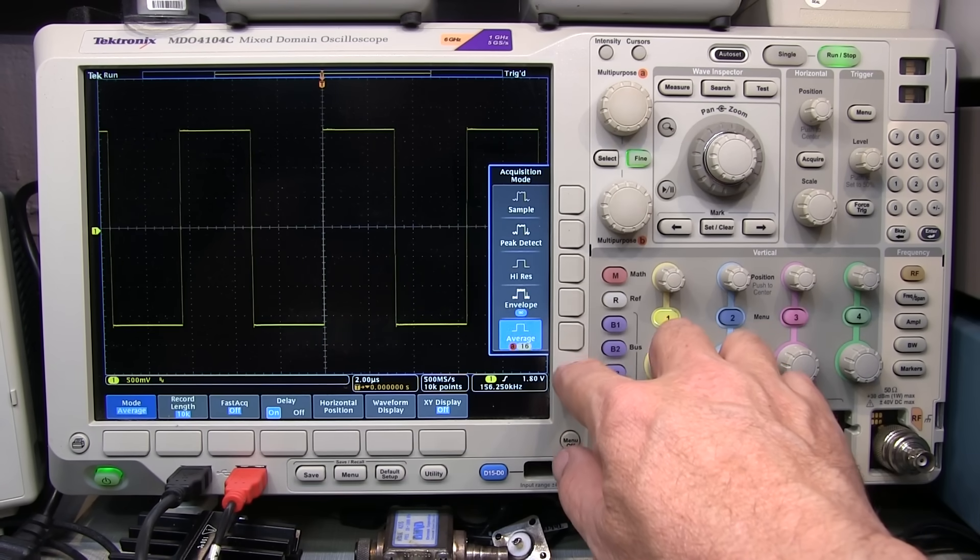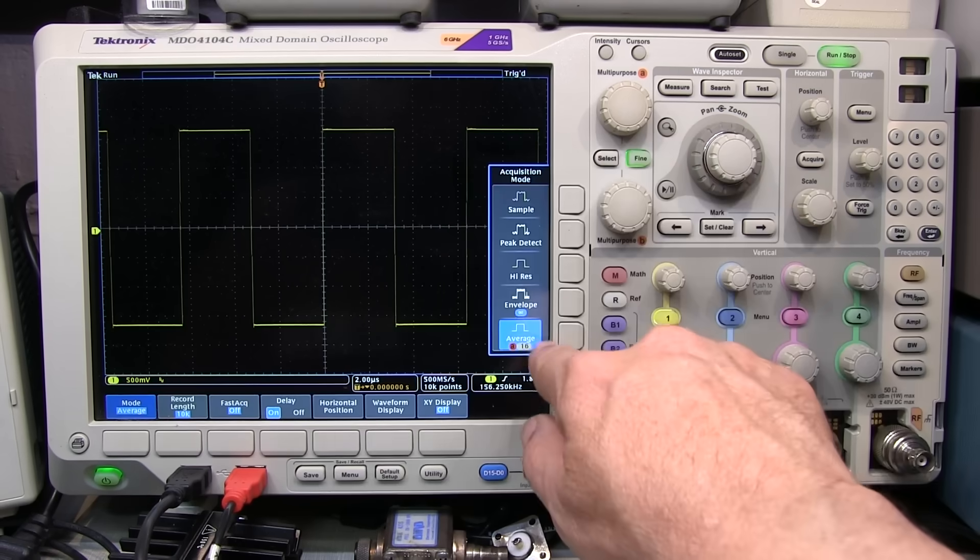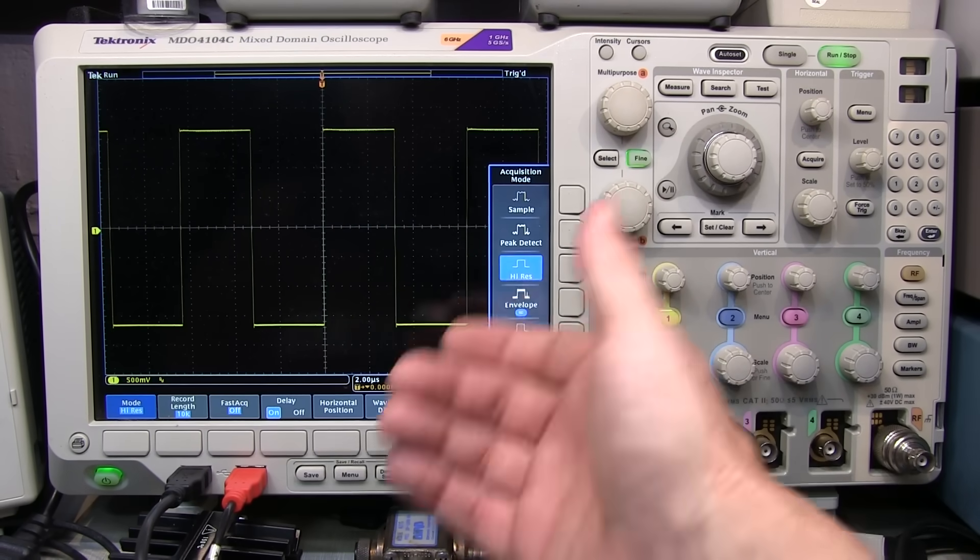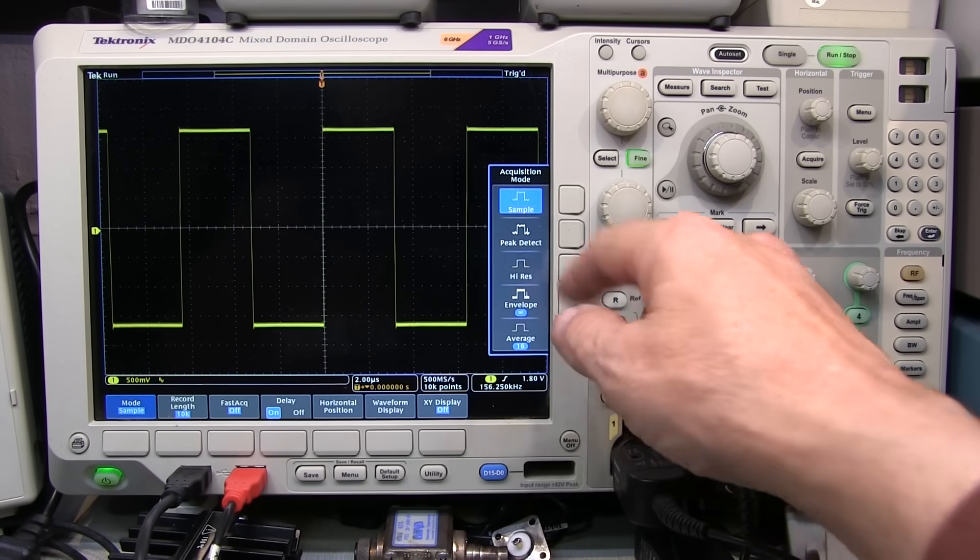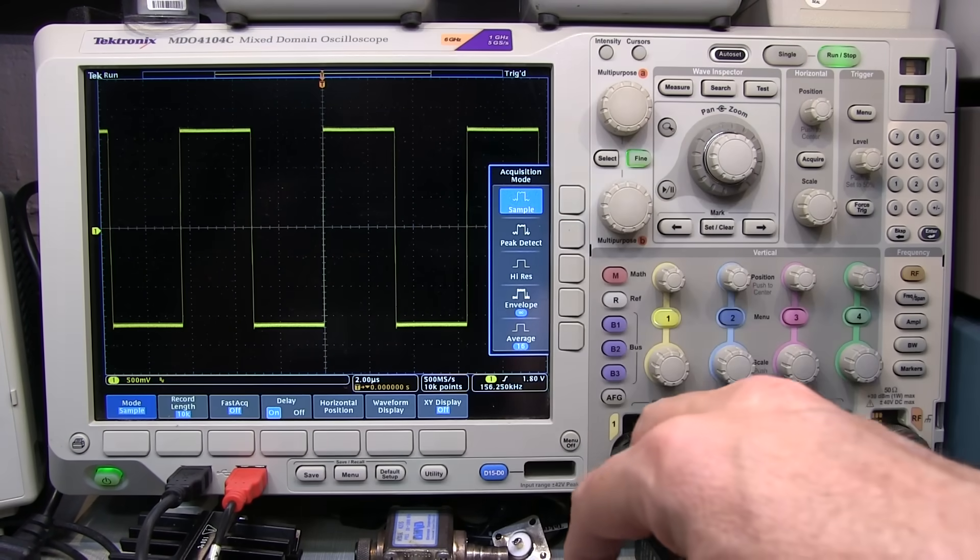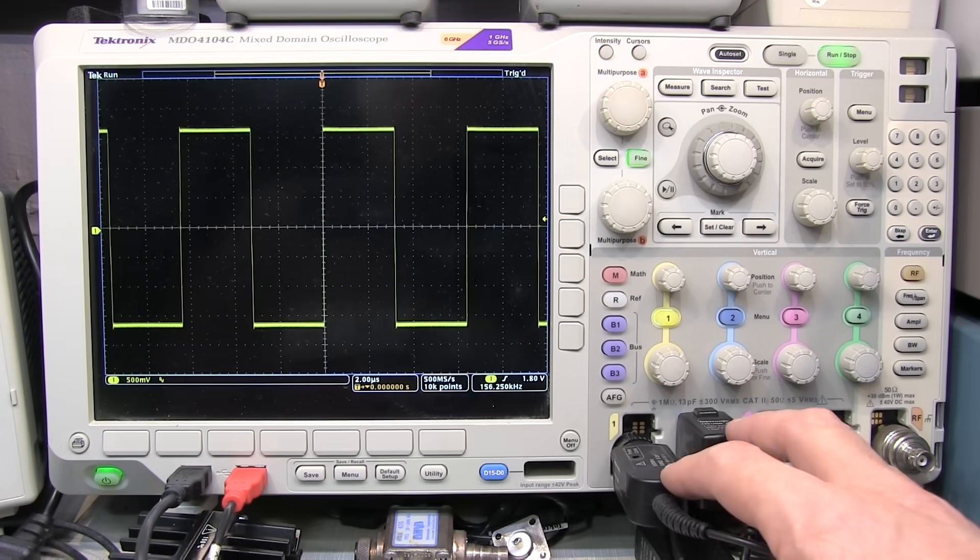The envelope mode is kind of like a peak detect with a hold. And then, of course, there's the average mode, which does averaging over multiple acquisitions as opposed to high res, which is an in situ average on each acquisition. Again, I've got a video down below that goes into these sample modes in more depth.